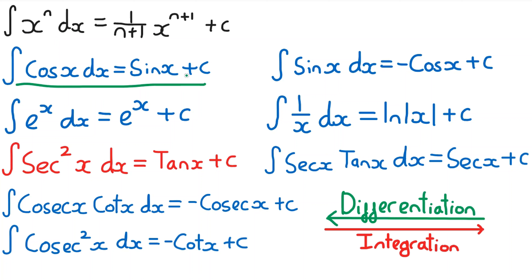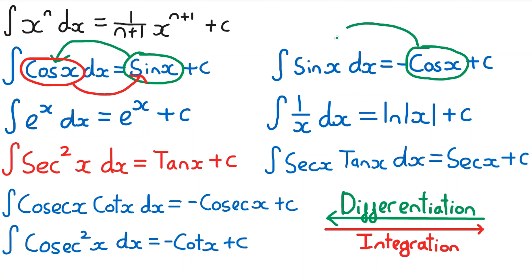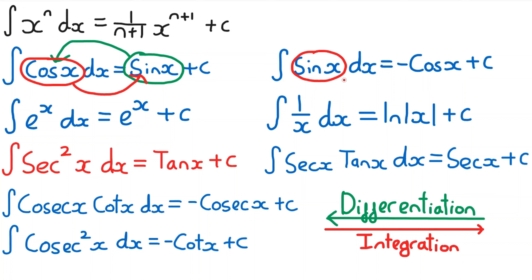For example, in Year 2 differentiation we talked about how when you differentiate sin x, it gives you cos x. So if we go in the other direction and integrate cos x, it brings us back to sin x. Similarly, when we differentiate cos x we get minus sin x, so if we integrate sin x we get minus cos x.